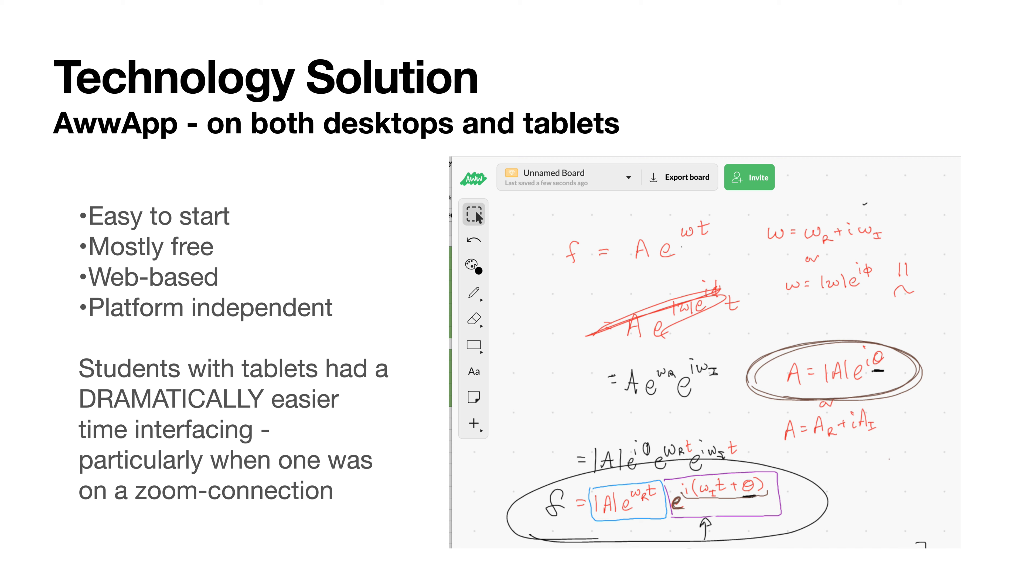The tool that Les found was called AwwApp, and this was really nice because it was web-based. If a student had a PC or a Mac or whatever, they were able to access the same whiteboard. It was platform independent and worked on desktops, tablets, and laptops. It was fairly easy to get going - you got a link, opened it, added your name, and could write on the whiteboard. For students, it was totally free.